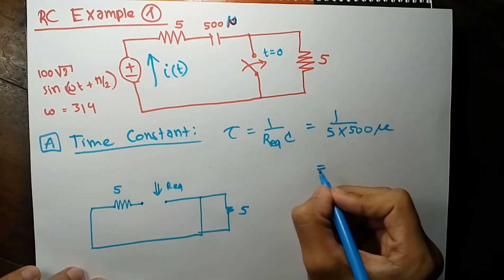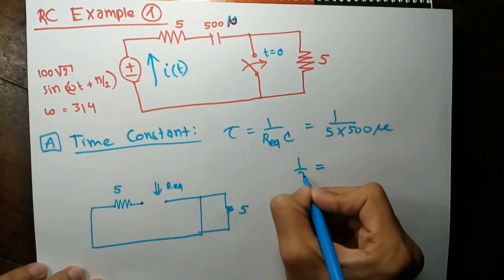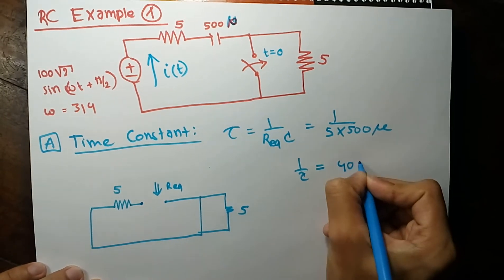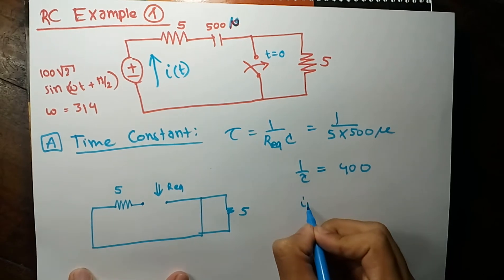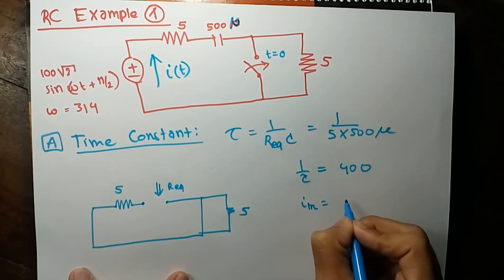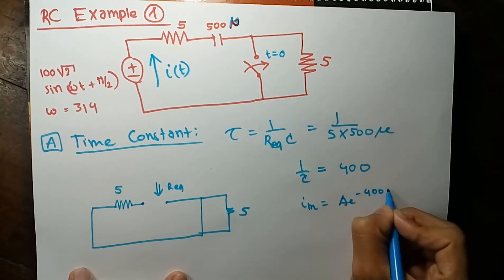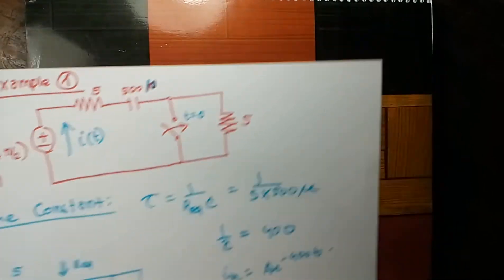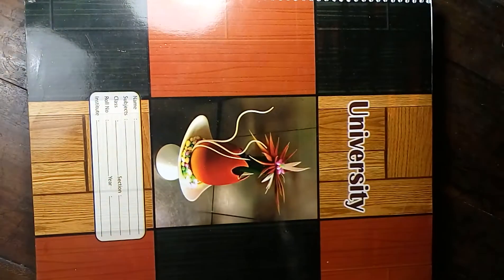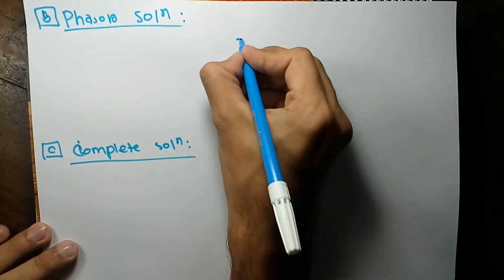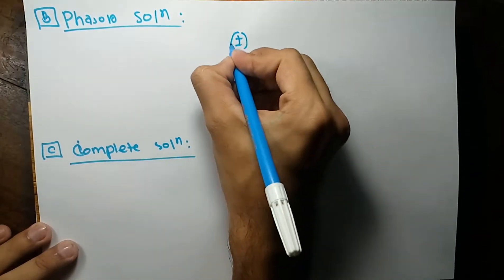So 1/tau equals (1/5) times 500 microfarads, giving 1/tau equal to 400. Therefore the transient solution is I_transient = A·e^(−400t). Now we'll find the particular solution. After switching, the circuit in phasor domain looks like this.